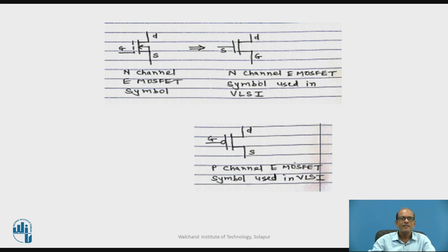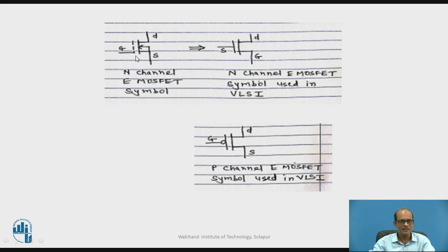This is the symbol of an N-channel Enhancement MOSFET. This symbol is simplified as shown on the right-hand side — this is the simplified N-channel E-MOSFET symbol used in VLSI, where the substrate shown by the dotted line is not used. Below that, you can see the symbol for the P-channel E-MOSFET used in VLSI.